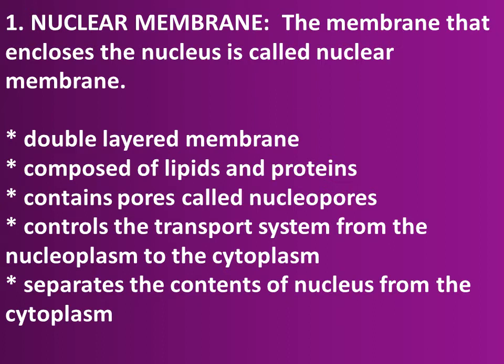1. Nuclear Membrane. The membrane that encloses the nucleus is called the nucleomembrane. It is a double-layered membrane composed of lipids and proteins. It contains pores called nucleopores, controls the transport system from the nucleoplasm to the cytoplasm, and separates the contents of the nucleus from the cytoplasm.